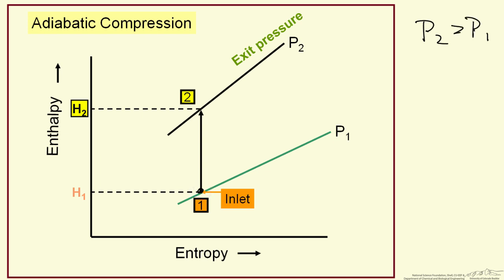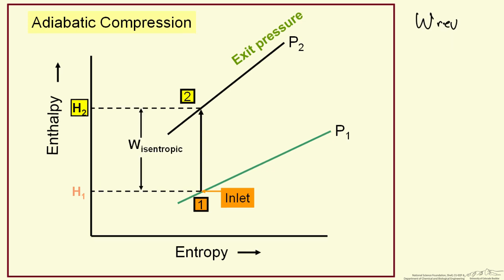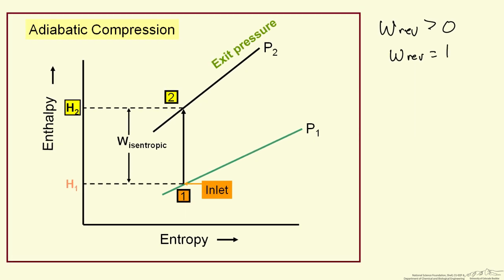If we look at the reversible process — adiabatic, that is the constant entropy process — we increase the enthalpy, which means we increase the temperature when we compress something. Higher enthalpy at the same entropy means a higher temperature. So we can see the work we have to do on the gas to compress it. Reversible work is the same as isentropic work. That's positive — we are adding energy to increase the pressure and increase the enthalpy. The reversible work is just the final enthalpy minus the initial enthalpy.